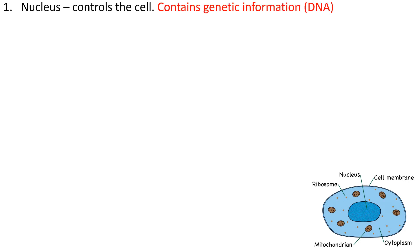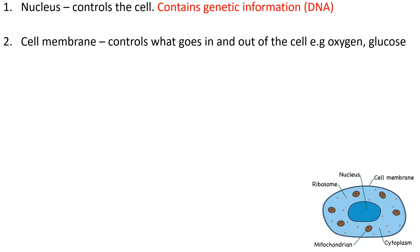So a nucleus controls the entire cell — it's the boss. Imagine if the cell was a factory, it's the manager there. It contains genetic information or DNA, and that's why it controls our whole cell. The cell membrane controls what goes in and out of our cells — things like oxygen, glucose, carbon dioxide — and that's by a few processes: osmosis, diffusion, and active transport, which I'll put in a later video.